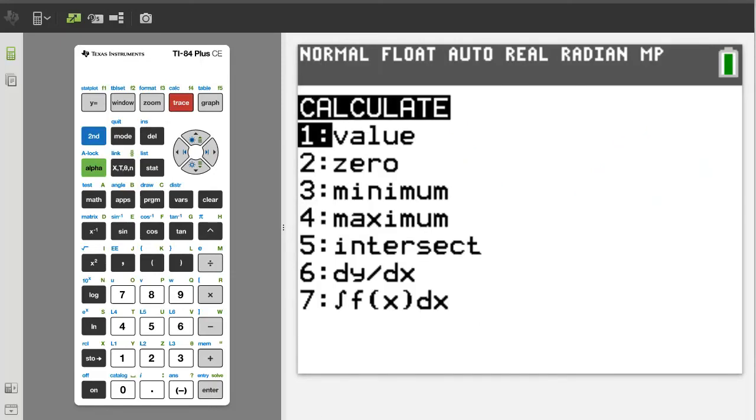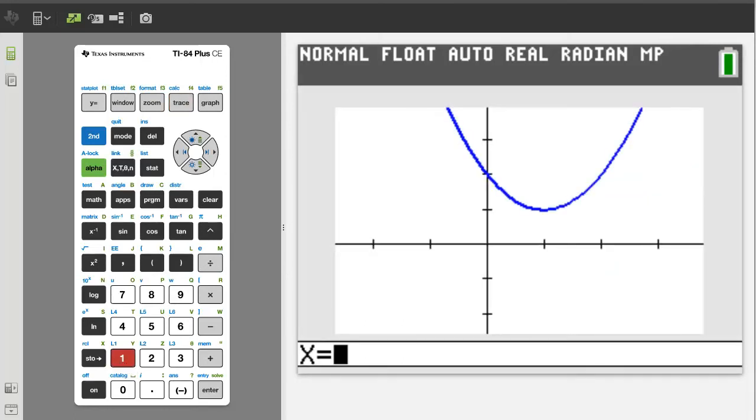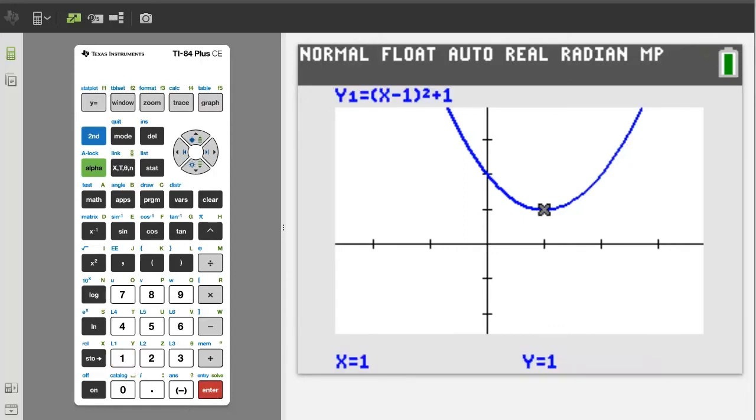We want number 1, value, so press the 1 button. It is asking for a x value. The x value for the vertex was x equals 1. So enter a 1 and press the enter button. At x equals 1, y equals 1.